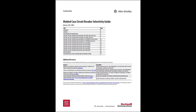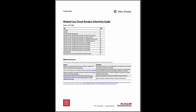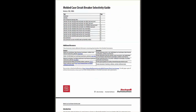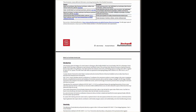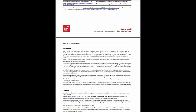The Selectivity Guide assists the designer of a power system in choosing an Allen-Bradley Molded Case Circuit Breaker (MCCB) or Miniature Circuit Breaker (MCB) for proper coordination in Main, Line, or Upstream circuits, and Branch, Load, or Downstream circuits.